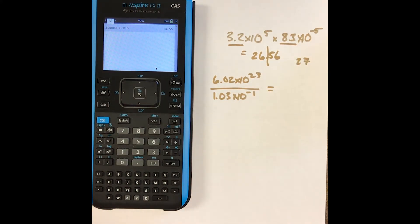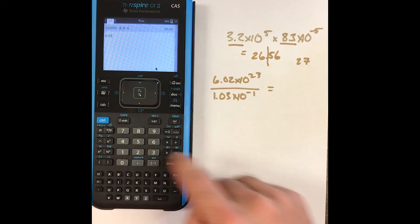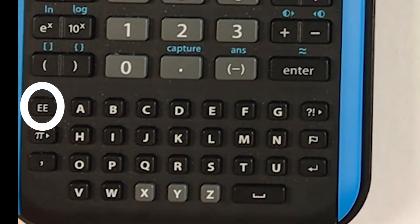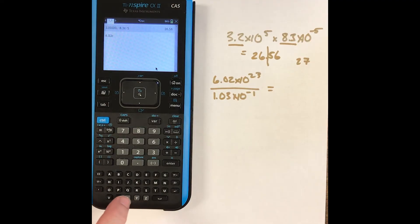Let's do this next one here. So I have a division problem, right? But I'm going to type in 6.02. What do you push? Double E. Do not push 10 to the X. Double E, 23,